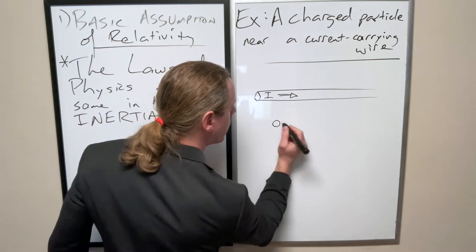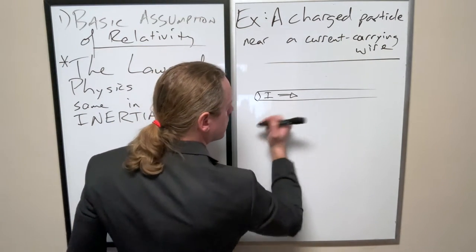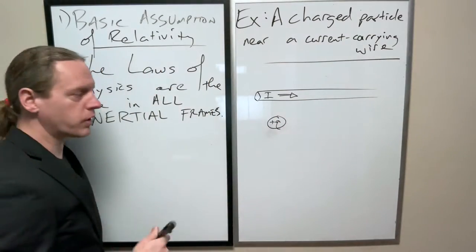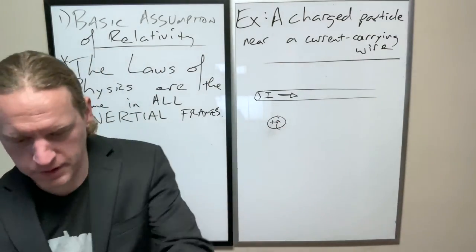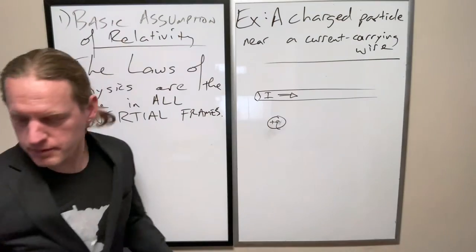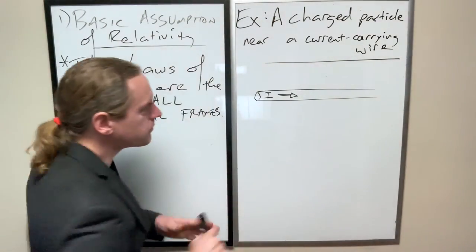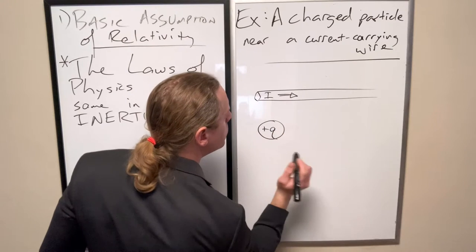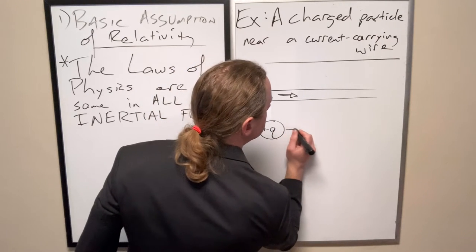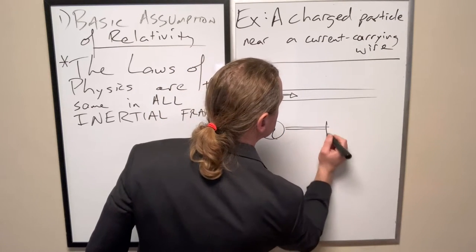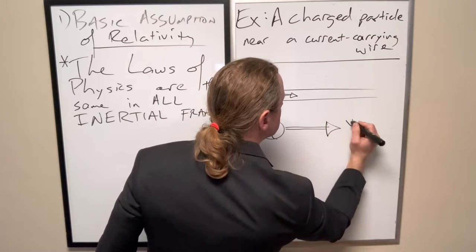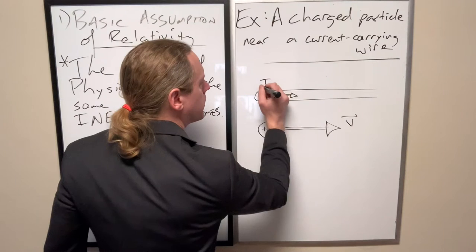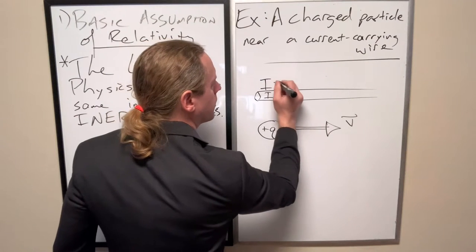We're going to take some charged particle here, plus Q. And we're going to take that charged particle plus Q and flick it to the right at some velocity V. I'm going to indicate more clearly that the current is moving to the right here.